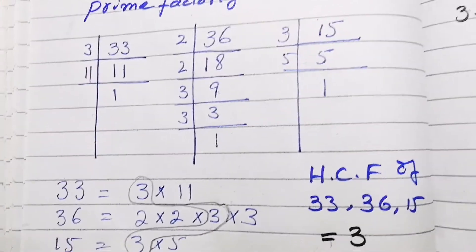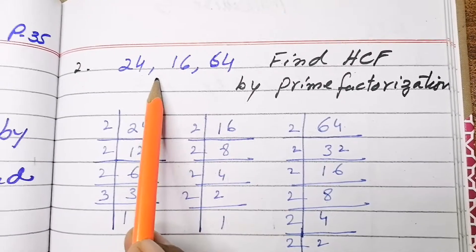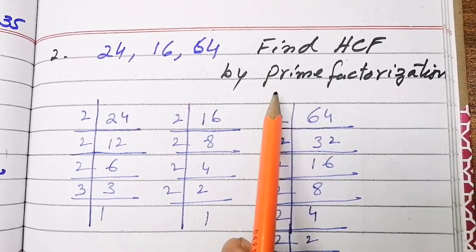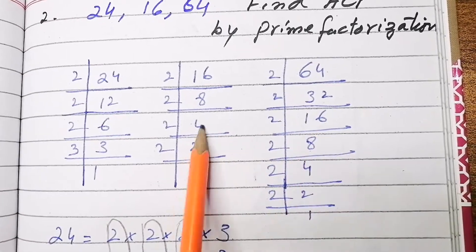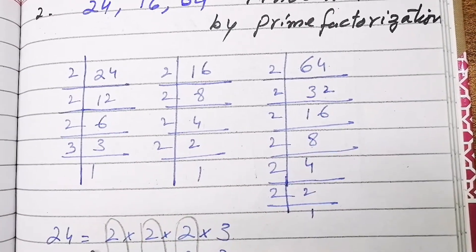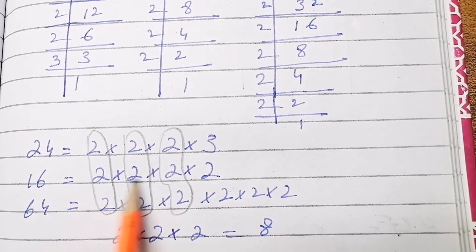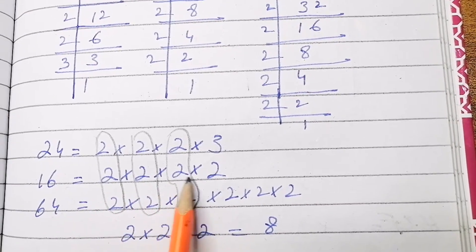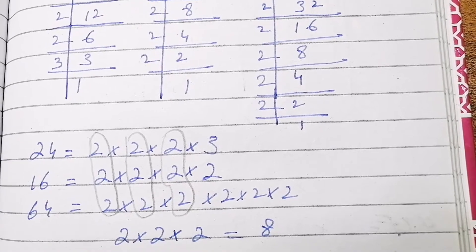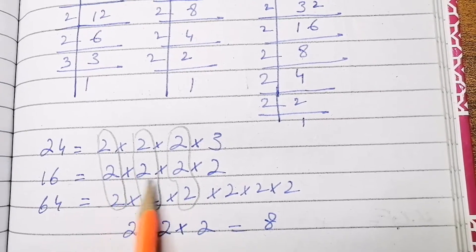For part 2, the numbers 24, 16, and 64 are given. Using prime factorization method, we take their factors separately: 24 = 2 × 2 × 2 × 3, 16 = 2 × 2 × 2 × 2 (four times), and 64 similarly. We then take the common factors.